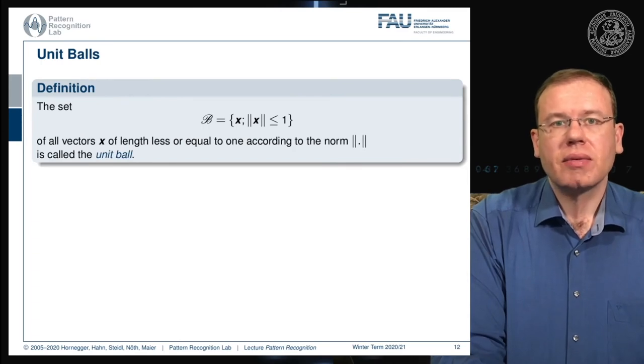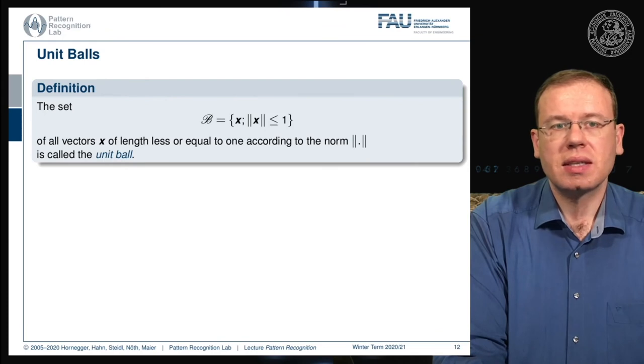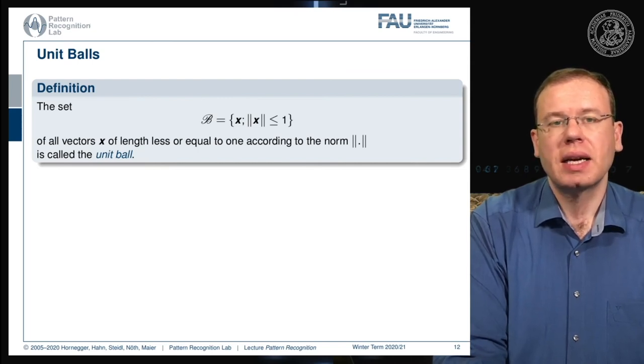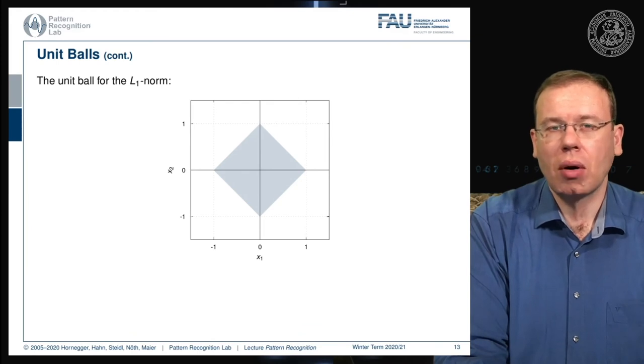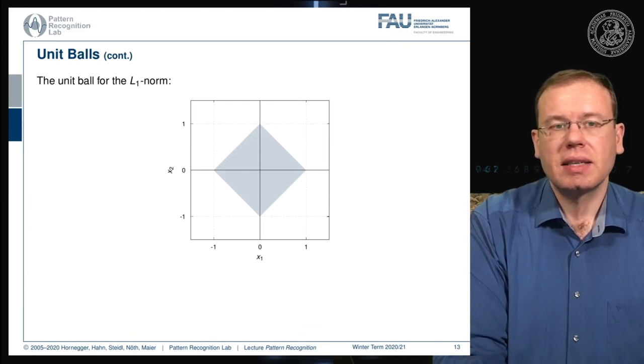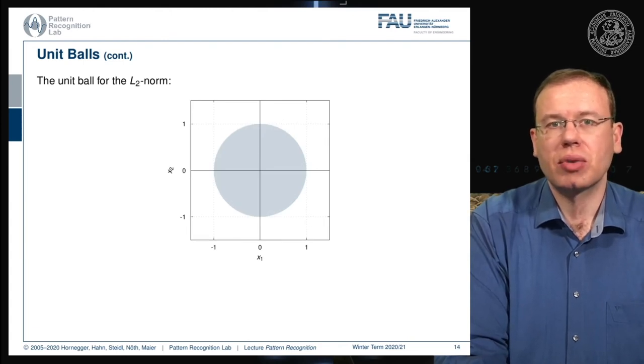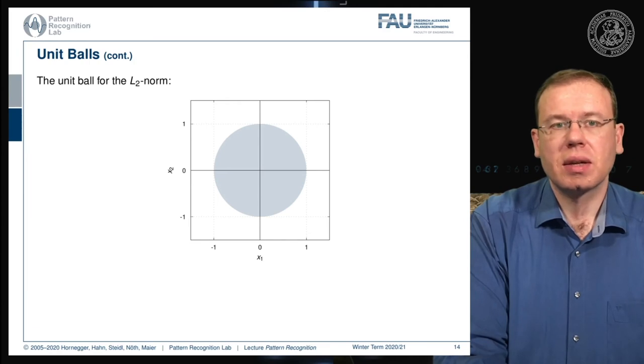An important concept for visualization are unit balls. The unit ball is the set of all points where the norm is less than or equal to one. We can see the unit ball for the L1 norm isn't actually a ball but looks like a diamond. The L2 norm gives much more the impression of a ball because it's round. For the maximum norm, this becomes a square where all elements are between minus one and one on both axes.